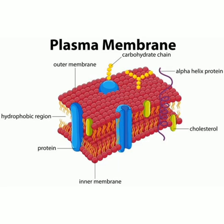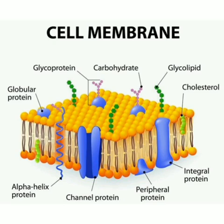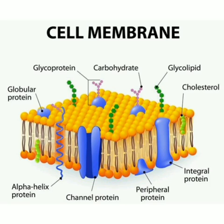This picture indicates the plasma membrane as a protein-lipid bilayer. The components include glycoprotein, carbohydrate, glycolipid, and cholesterol. Now moving on to diffusion — diffusion means the movement of substances from a region of high concentration to a region of low concentration.